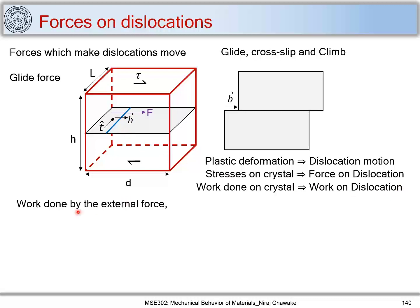Let's write down what is the work done by the external force. The force is stress multiplied by area and then by distance. I have a shear stress tau acting on this plane, and I can multiply by its area to get the force acting on this crystal. The area of this plane is L into D, and the distance which it moves will be the Burgers vector B. So the work done on a crystal by shear stress tau will be tau × L × D × B.